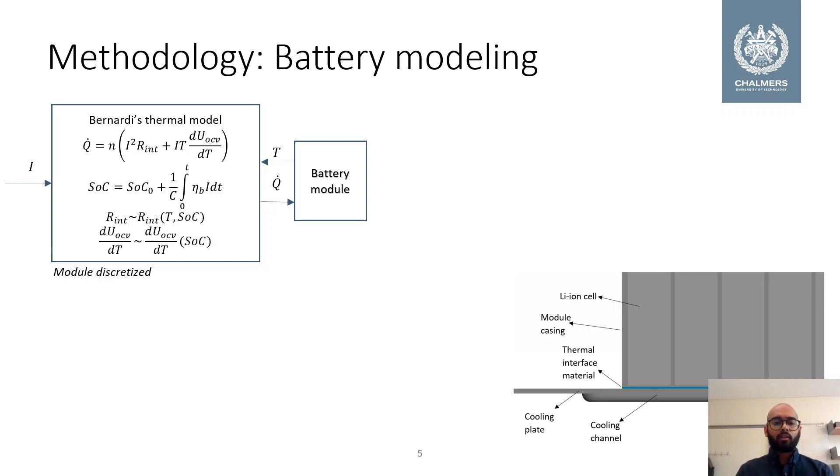Note that the N in the top equation represents the number of cells in each battery module. Also note that the internal resistance is a function of temperature and state of charge and the entropy coefficient, which is the change in open circuit voltage with respect to temperature, is a function of state of charge. These values were obtained from Volvo and so were the thermal properties for the battery cells.